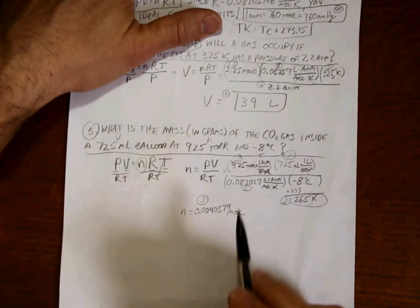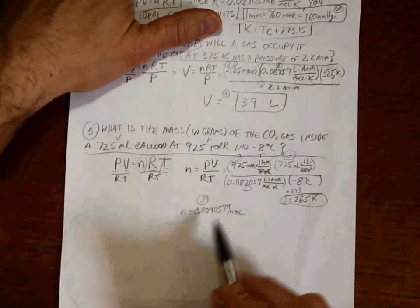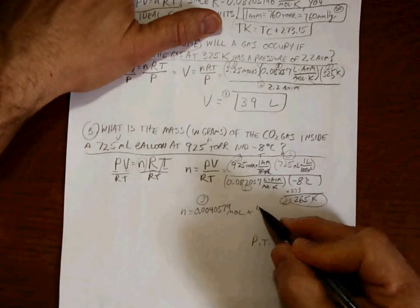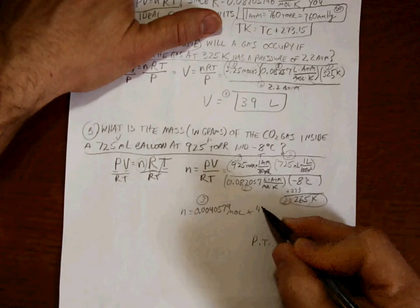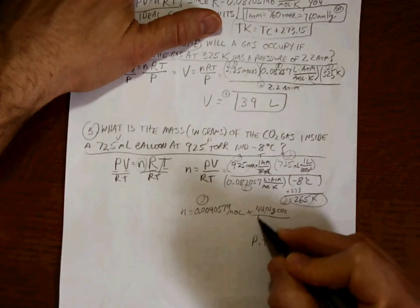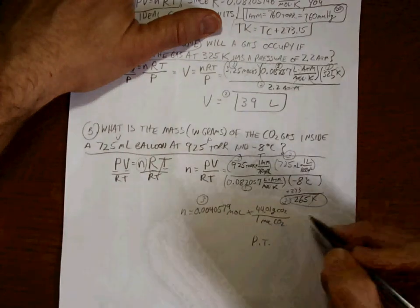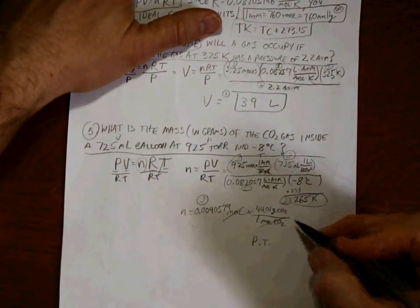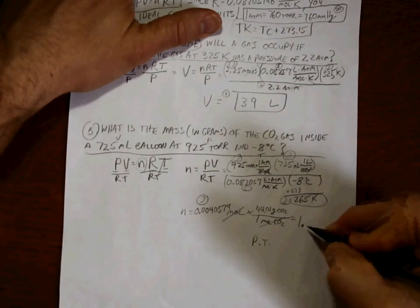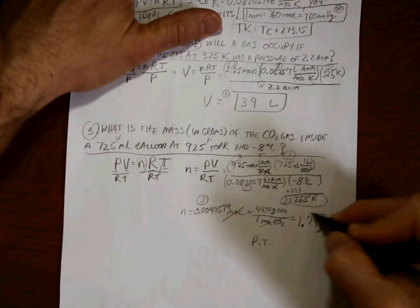We want the mass in grams. We're at moles. That's just periodic table stuff, right? 44.01 grams of CO2 every one mole of CO2. And I recalculate that out. 1.79 grams.